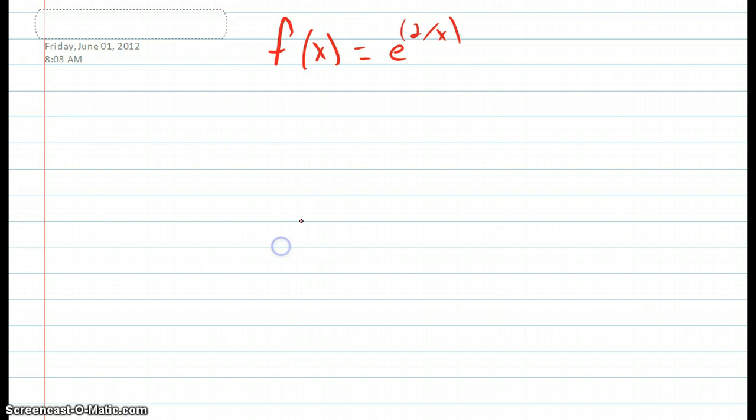Okay, so for question number 12, we're trying, we're given f of x equals e to the 2 over x, and we're trying to find f prime of x. And so to do this, you can use the, well, I think it's helpful to rewrite e to the 2 over x. I'd like to write it as e to the 2 times x to the negative 1, which is really just the same thing, but I think that it's easier to see it as that. And then we have to use the chain rule.